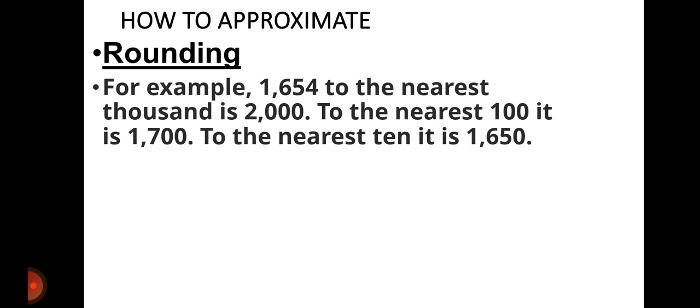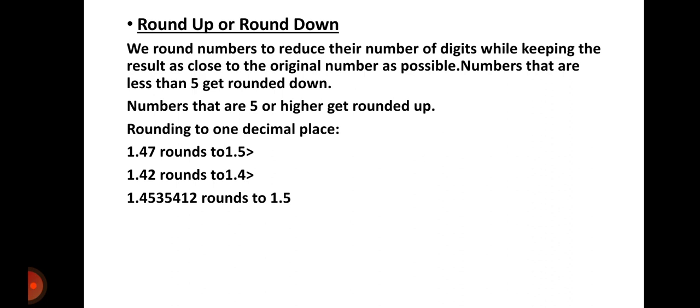Then to the nearest ten — we know that we have 1,654. This 4 is not up to 5, because just like 500 is half of 1,000 and 50 is half of 100, 5 is half of 10. This 4 is not up to 5, so we round it down. From 54, we take it back to 50, because 50 is closer to 54 than 60. As we all know, we talked about the rounding up of numbers and the rounding down of numbers.